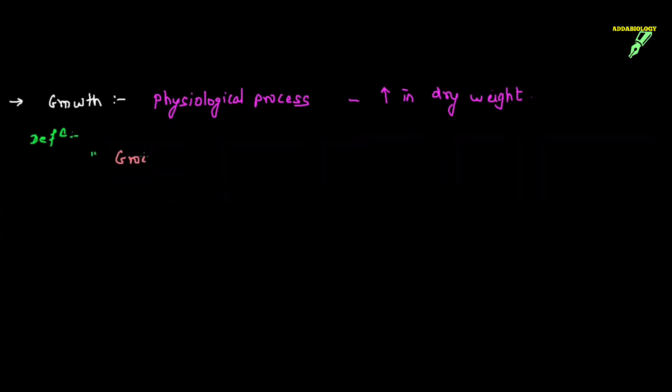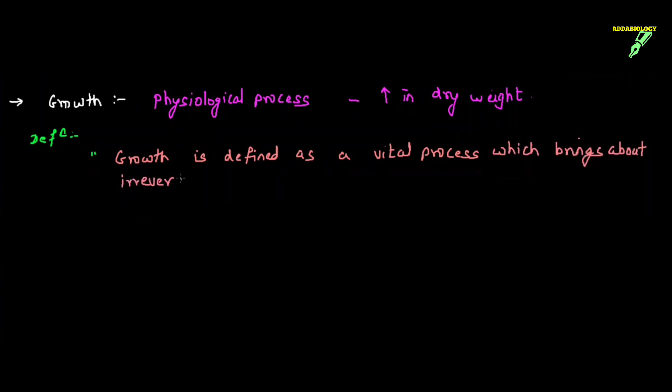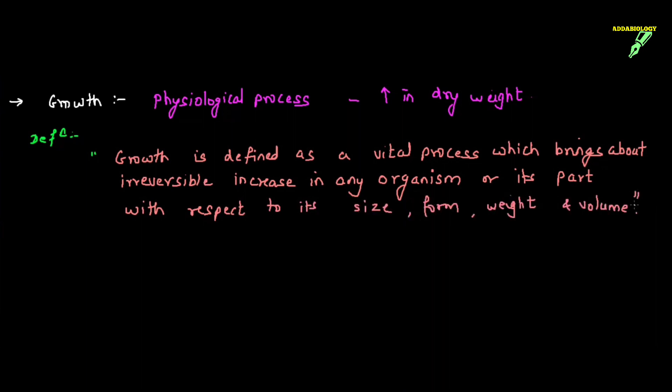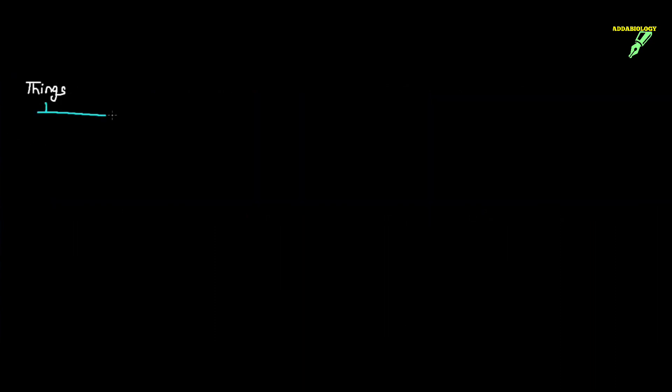Now whenever we talk about growth, there has to be some standard definition for growth. Let's understand: first of all, growth is a physiological process in which there is increase in dry weight of the plant. When I say dry weight of the plant, it means there has to be no water. So I will say that growth is defined as a vital process, which brings about irreversible increase in any organism or its part with respect to its size, form, weight, and volume. This is the exact definition for growth.